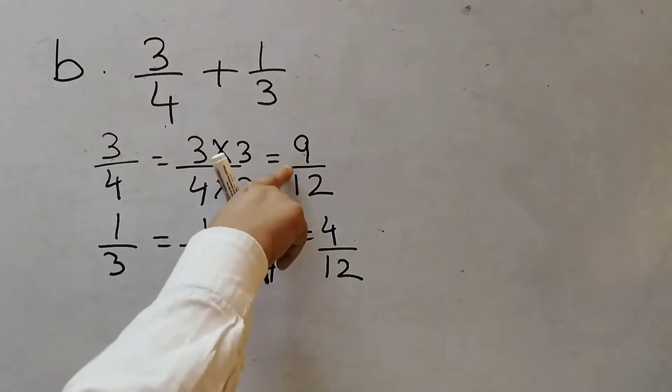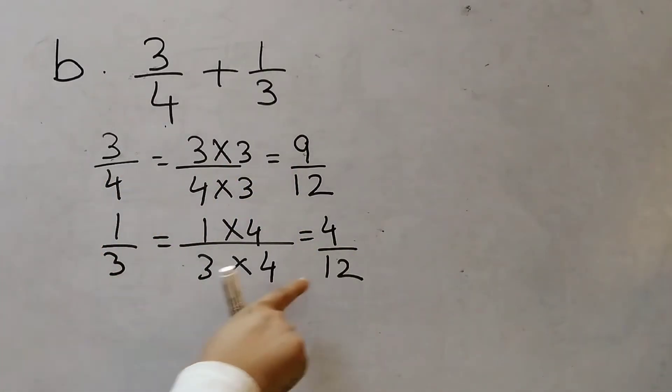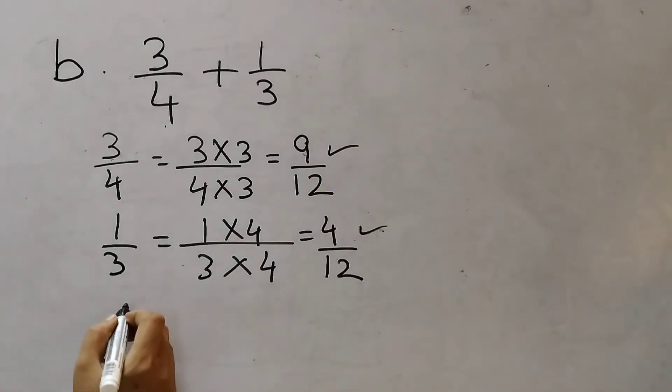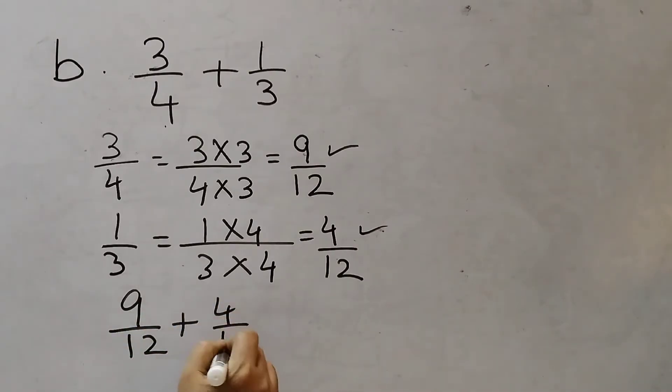So now 3 by 4 has become 9 by 12. And 1 by 3 has become 4 by 12. These are called the equivalent fractions. Now we are going to add this one and this one. So 9 by 12 plus 4 by 12. Same way. Denominator same. So add the numerators. 9 plus 4 is 13. 13 by 12.